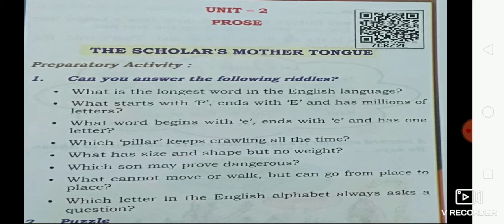First question: what is the longest word in the English language? Think and write down the answer below the question. The answer is 'smiles' — S-M-I-L-E-S. Yes, smiles, because the first letter is 'S' and the remaining word is 'miles'.